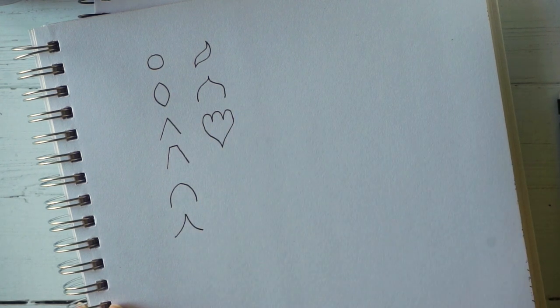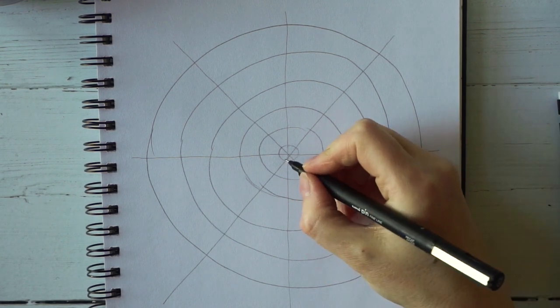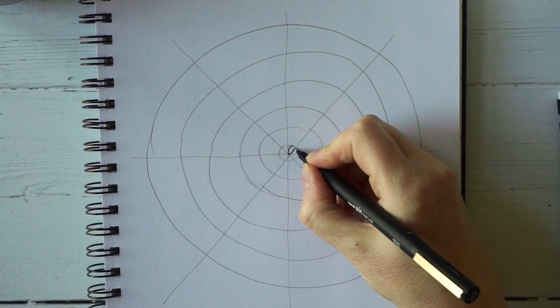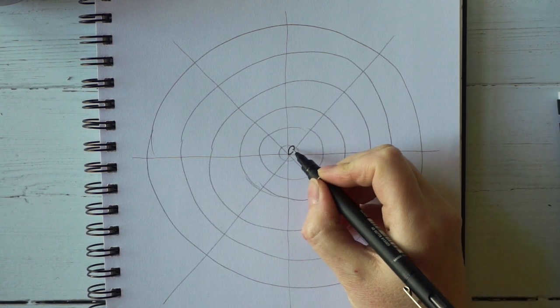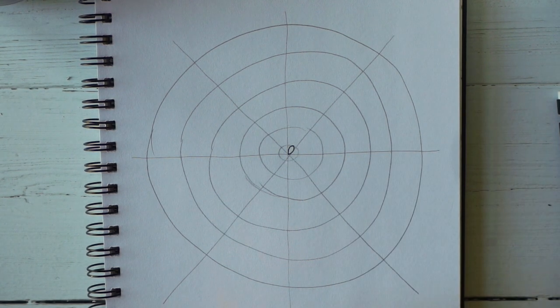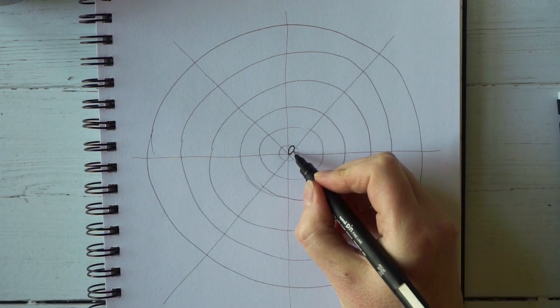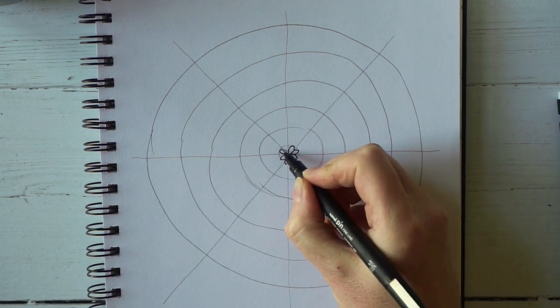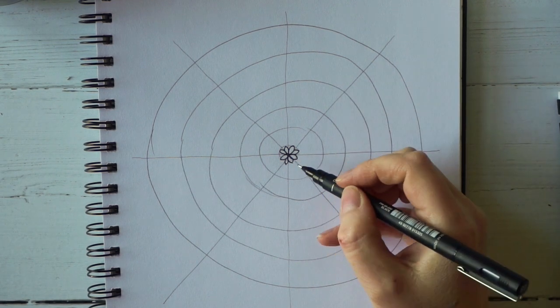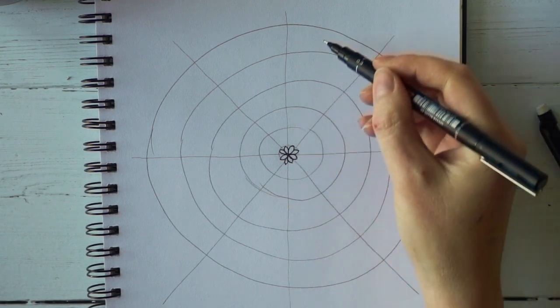I'm going to start in the center and do a little petal shape that goes from the center and goes out to this line I've drawn. I've done this in one segment, so now I'm going to do it in all the rest. I'm going to continue working out from the center, drawing simple shapes based on either straight or curved lines until I get to the edge.